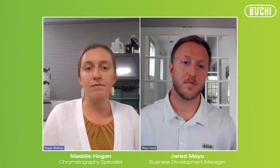All of these differences together make a big difference in terms of total processing time. For purifying one gram of racemic ketoprofen, it was going to take 111 hours on the normal phase prep HPLC, whereas on the SFC it was only going to take 17 hours to purify the same amount. So we're looking at processing the same amount of material on the SFC in about a fifth of the time it would take on a standard preparative HPLC.